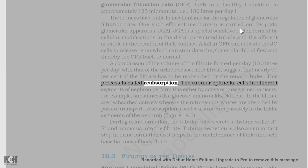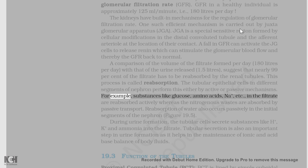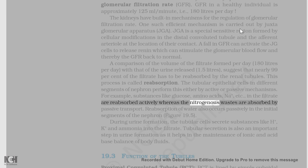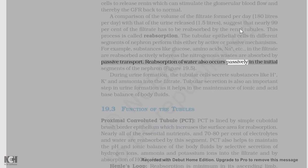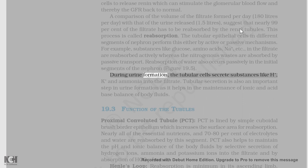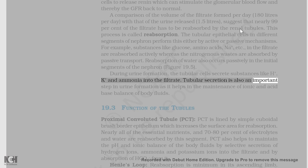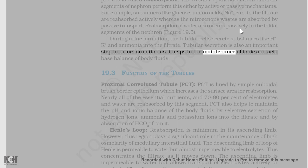This process is called reabsorption. The tubular epithelial cells in different segments of nephron perform this either by active or passive mechanisms. For example, substances like glucose, amino acids, Na+, etc., in the filtrate are reabsorbed actively whereas the nitrogenous wastes are absorbed by passive transport. Reabsorption of water also occurs passively in the initial segments of the nephron. During urine formation, the tubular cells also secrete substances like H+, K+, and ammonia into the filtrate. Tubular secretion is also an important step in urine formation as it helps in the maintenance of ionic and acid-base balance of body fluids.